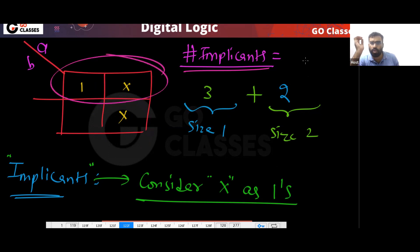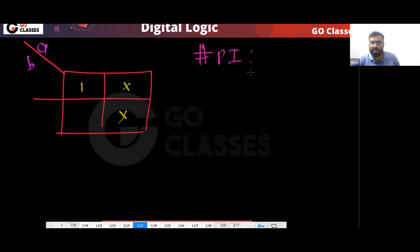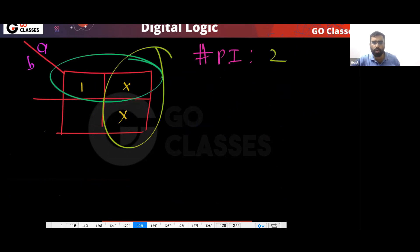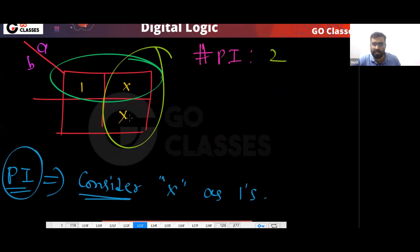So if you want to find the number of implicants, consider these don't cares as ones. These don't cares are also implicants, giving a total of five implicants. The same applies when counting prime implicants — also consider don't cares as ones. Total two PIs.